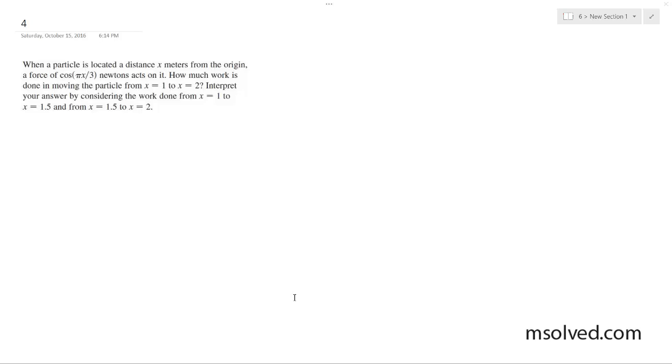The amount of work being done is moving from x equals 1 to 2. Interpret your answer. Consider the work done from x equals 1 to 1.5 and then 1.5 to 2.